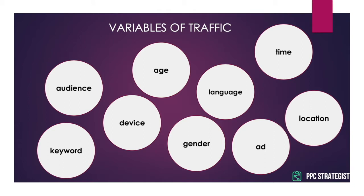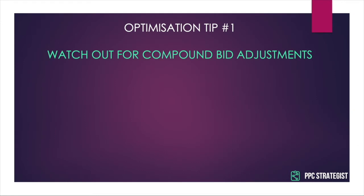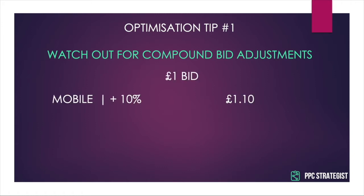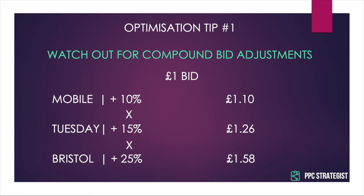When it comes to making these bid adjustments on manual bidding, there are a few things you'll want to look out for. Optimisation tip number one: bid adjustments multiply, so remember to watch out for compound bid adjustments. For example, if you bid up by 10% for mobile traffic, maybe another 15% based on it being a Tuesday, and another 25% increase based on someone being in Bristol as the location, then when someone triggers your ad from a mobile in Bristol on Tuesday, you have a bid adjustment of 58%.